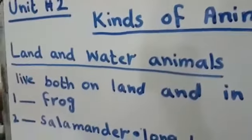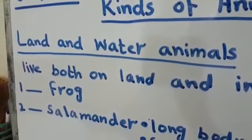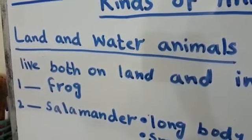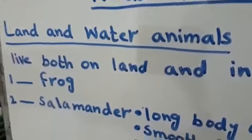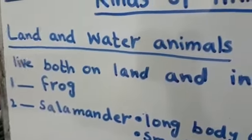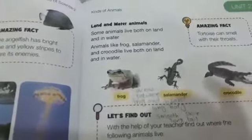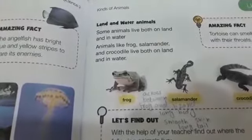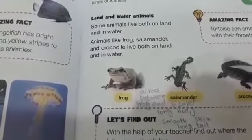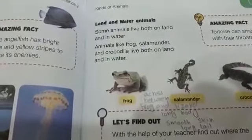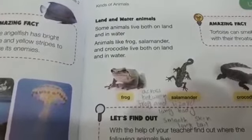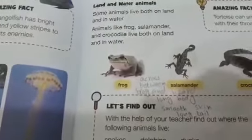Unit 2: Kinds of Animals — Land and Water Animals. These animals live both on land and in water. For example, frog — you can see in the picture. Some animals live both on land and in water; animals like frog, salamander, and crocodile live both on land and in water.